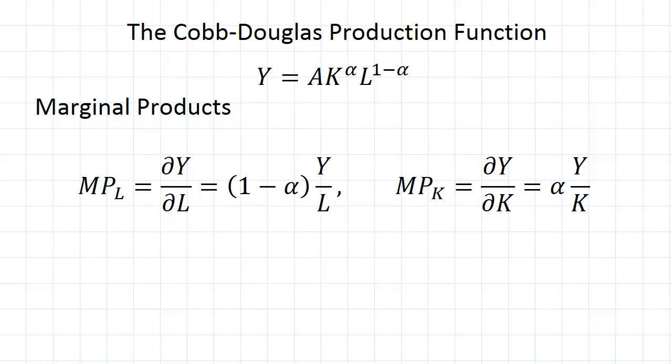When we take the partial derivative first with respect to labor, note that A times K to the power of alpha is a constant with respect to labor. When we're taking the partial derivative we treat all other variables as constants. So we're going to keep that in AK^α and then essentially we're just differentiating L to the power of 1 minus alpha.